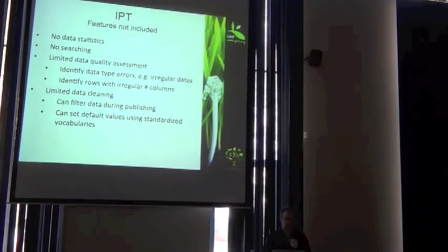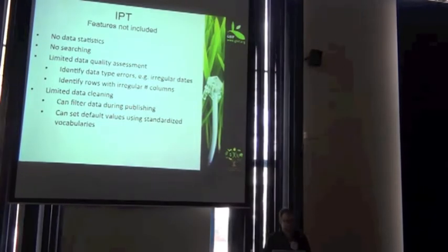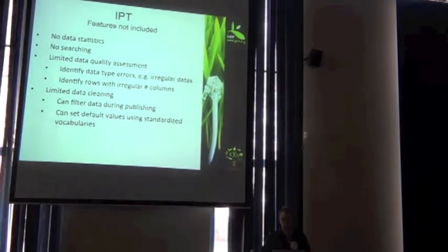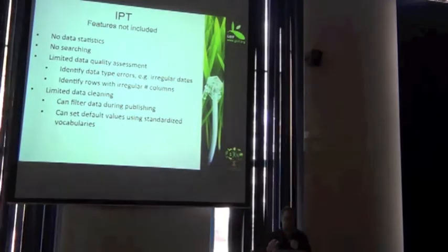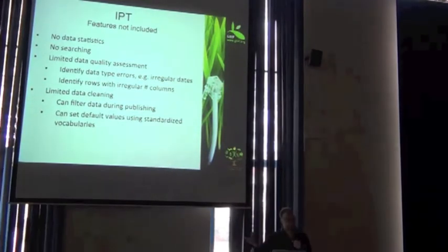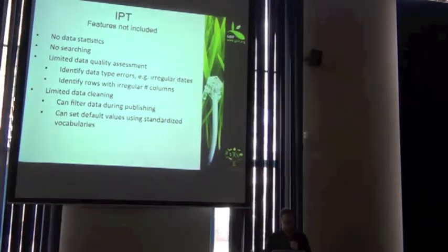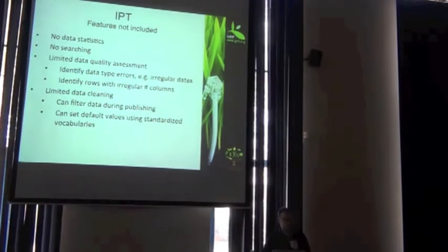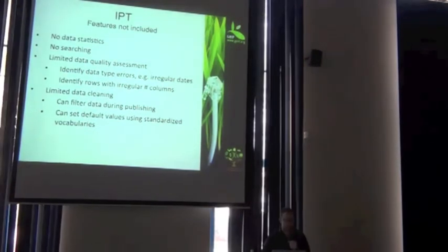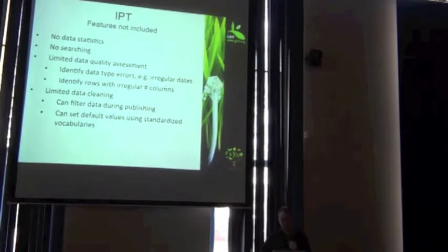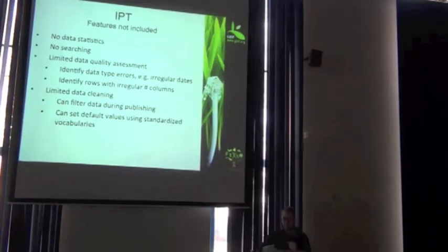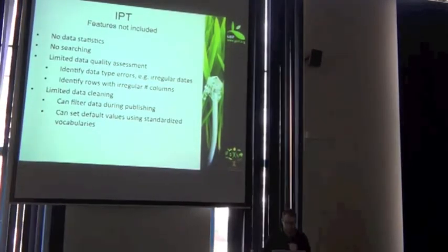There's no built-in data statistics in this tool. You can't visualize your dataset's distribution by kingdom, for example — there's no statistics built in there. You can search through the individual records, so if you wanted to search for which datasets inside of the IPT contain a certain species, you can do that.